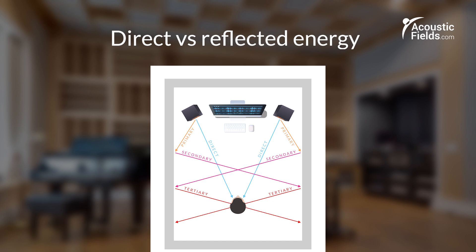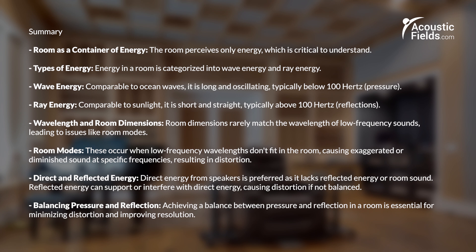Look at this reflection graphic. In two-channel audio, the direct energy from our speakers is straight-line energy — the shortest distance between two points is a straight line. That straight-line energy from our speakers does not contain reflected energy or room sound, so that's the desired energy we want to reach our ear first. The reflected energy supports the direct energy, but it can also interfere with it. If we get too much time signature variation in the reflected energy versus the direct, we have distortion. The goal is to balance both pressure and reflection in a room. We're going to do another video on the treatment side showing the differences in the two forms of treatment required for pressure and reflection.